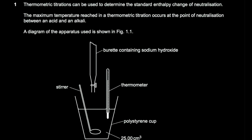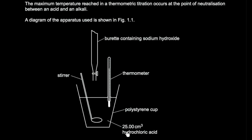A diagram of the apparatus is shown in figure 1.1. Here we're doing a titration of hydrochloric acid against sodium hydroxide, monitoring the temperature change. The maximum temperature will occur at the point of neutralization.